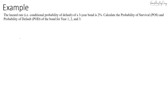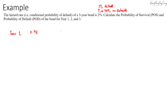In year one, there is a two percent chance of default every year. This is the probability of default, so there will be a 98 percent chance of surviving. Looking at just the first year, the probability of survival is 0.98 and the probability of defaulting is two percent.